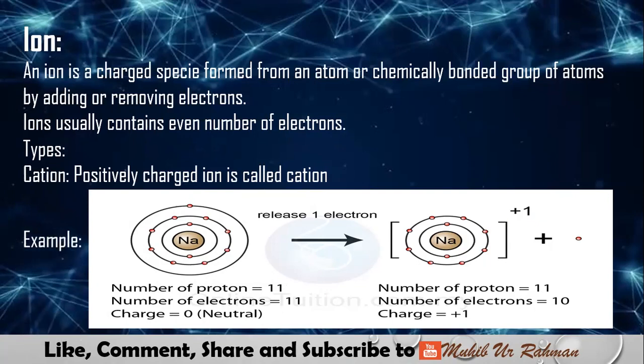Two types are cations and anions. Cations are positively charged ions. Let's suppose we have a sodium atom with 11 protons and 11 electrons. Protons have positive charge, electrons negative charge - both cancel out, so the sodium atom is neutral. When this electron is lost, protons remain 11 but electrons reduce to 10. Overall charge is plus one because protons outnumber electrons. This positively charged species is called a cation.